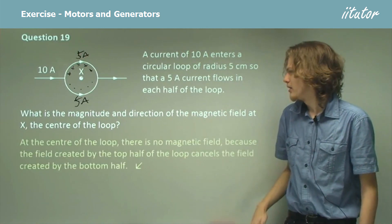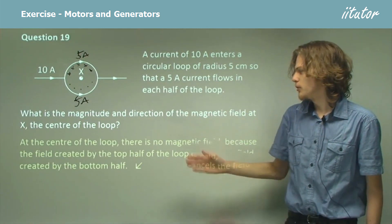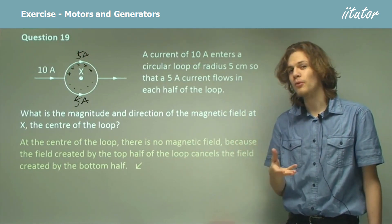So our answer is, at the center of the loop there is no magnetic field, because the field created by the top half is cancelled out by the field created by the bottom half.